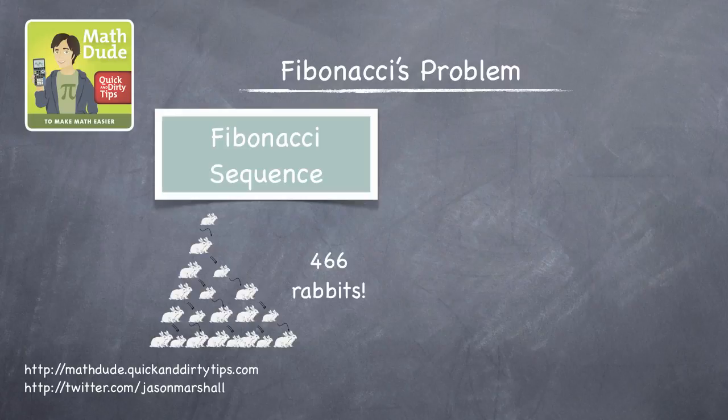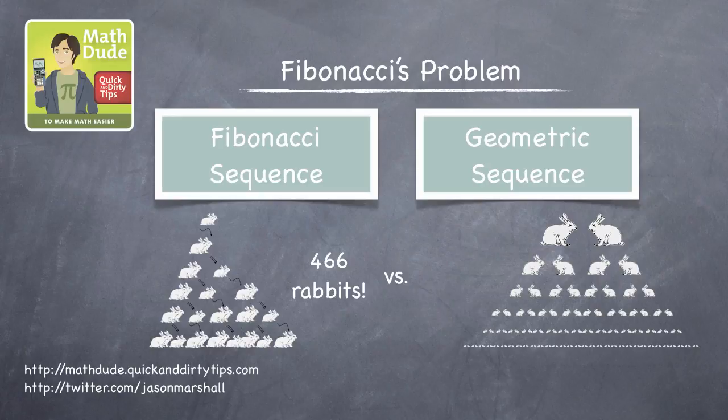But how does that compare to the exponential growth of the model where rabbit populations grow like a geometric sequence? The difference is huge. If the rabbit population grew like a geometric sequence and doubled every month, at the end of a year, there'd be 8,192 rabbits.